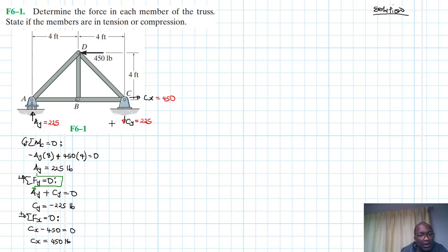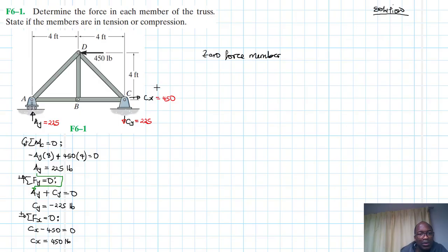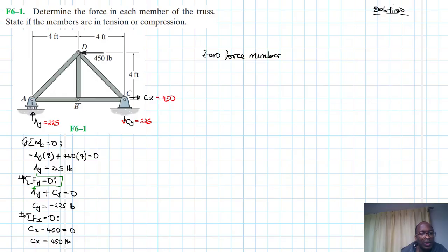Let's do a quick inspection of our structure. We realize that member BD is a zero force member — a member with zero internal force. If you apply the equations of equilibrium at joint B, you find that BD equals zero.